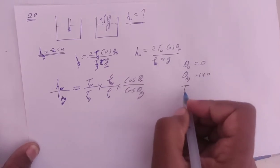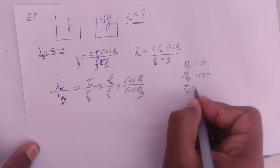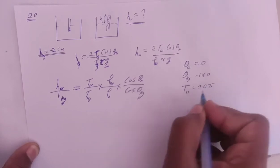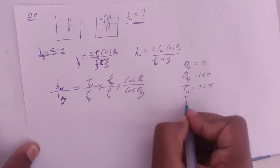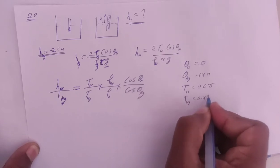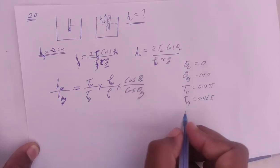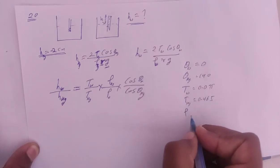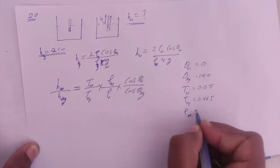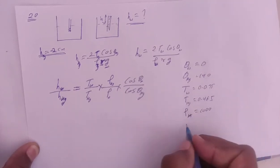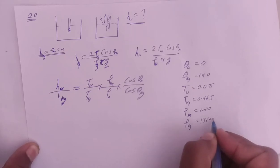For surface tension, water's is 0.075 and mercury's is 0.0465. For density, water's density is 1000 and mercury's density is 13600.